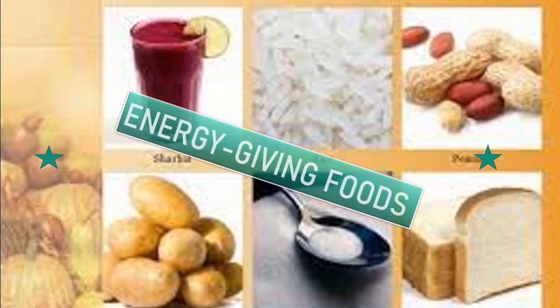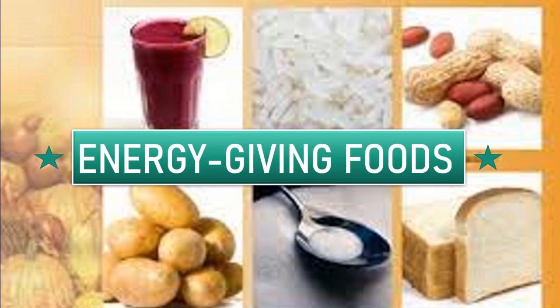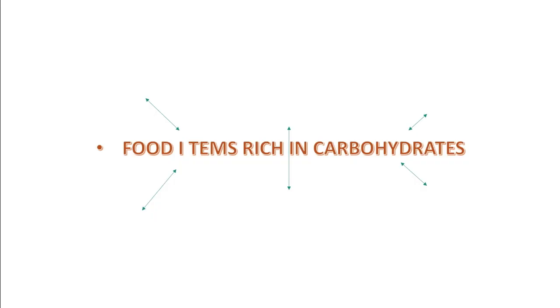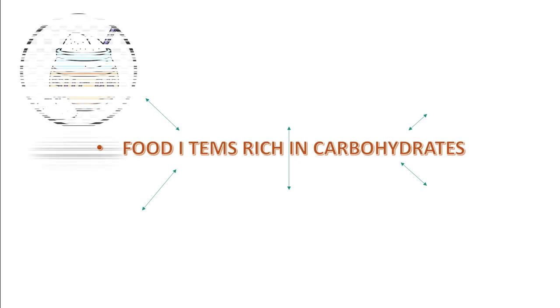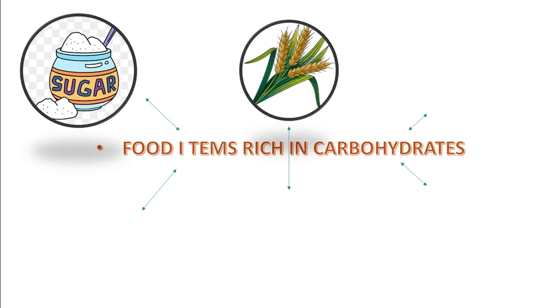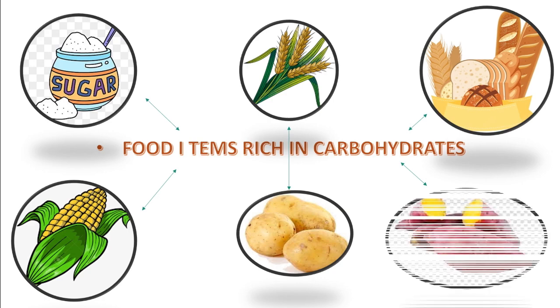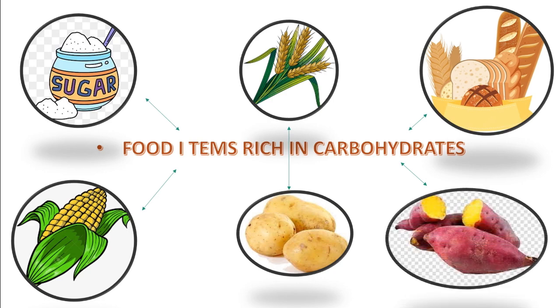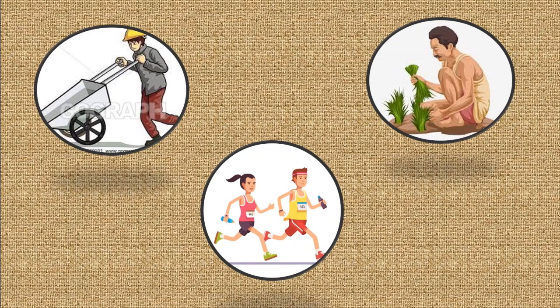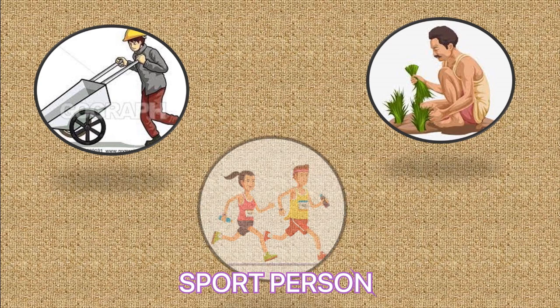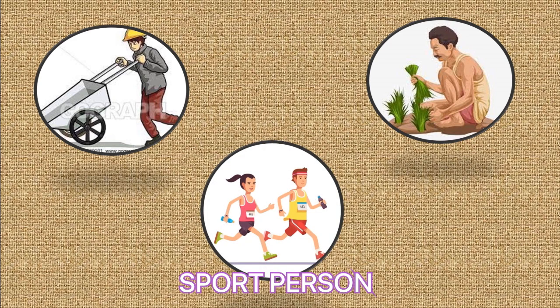Therefore carbohydrates are also known as energy-giving food. The food items that are rich in carbohydrates are sugar, wheat, bread, corn, potatoes and sweet potatoes. People who do a lot of physical work, such as laborers, farmers and sportspersons, need a lot of carbohydrates in their diet compared to a person who sits in an office all day.